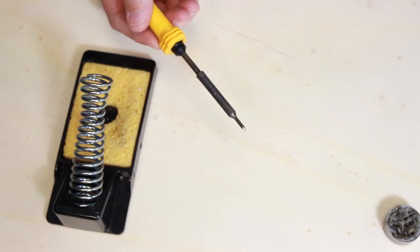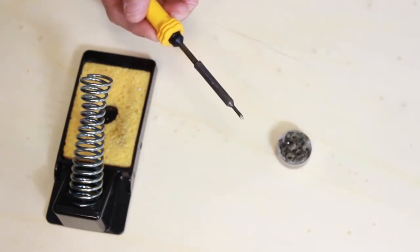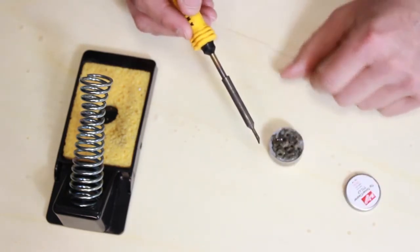Now, if we had a tip that was very black and we would find it very hard to get the black material away, we can use this, which is called tip tinner and cleaner. This helps remove this dark black material.